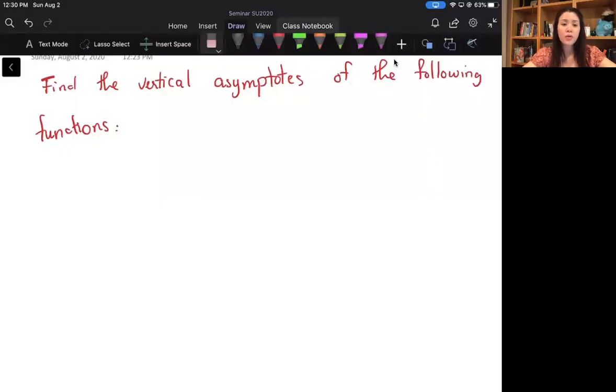Hi, let's go through some examples of how to find the vertical asymptotes of trigonometric functions. So I want to find the vertical asymptotes of the following function.